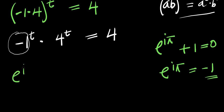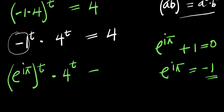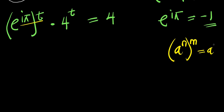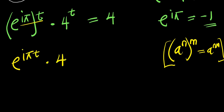So let's replace it here. We have e to the power i times pi, raised to the power of t, times 4 raised to the power of t equals 4. What we can do is multiply the exponents using the identity: if you have a to the power of n to the power of m, this equals a to the power n times m. So we have e to the power of i times pi times t, times 4 raised to the power of t, equals 4.